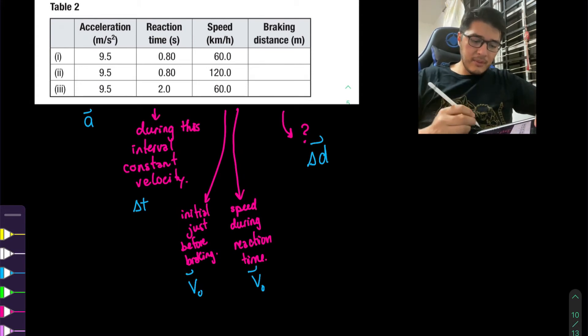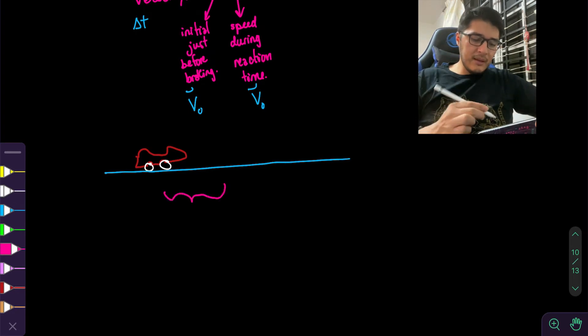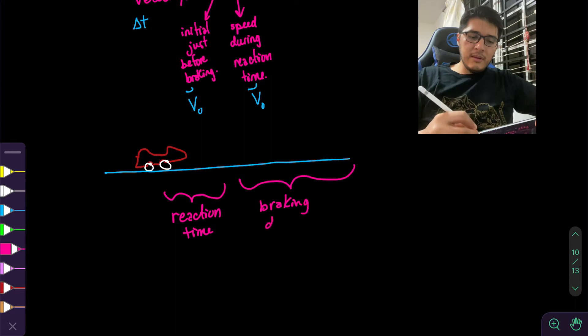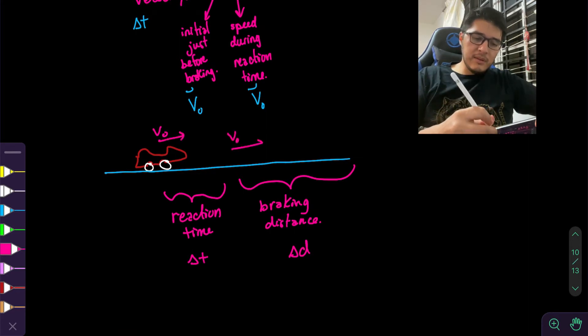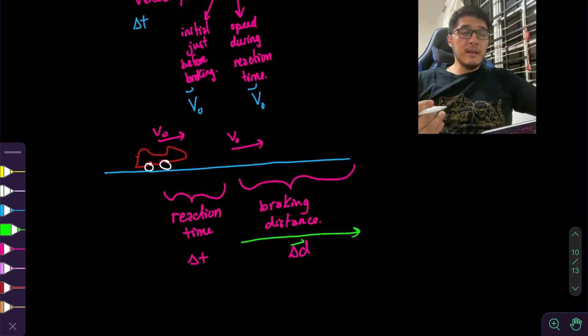And to visualize this even more, let's just quickly draw a picture. So here we have a nice red convertible. And then let's have the reaction time. And we have the braking distance. And the initial speed is going to be the same in these two cases. And our displacement, let's assume it takes place to the right. And assuming that that's your braking distance.